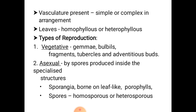In asexual reproduction, the plant reproduces asexually by spores. The spores are produced inside specialized structures called sporangia. The sporangia are usually borne on leaf-like structures called sporophylls, which are produced in a cluster in the form of a cone or strobili. The spores are haploid and may be similar, called homospores, or of two different types, called heterospores.